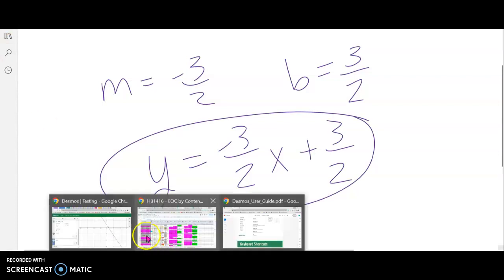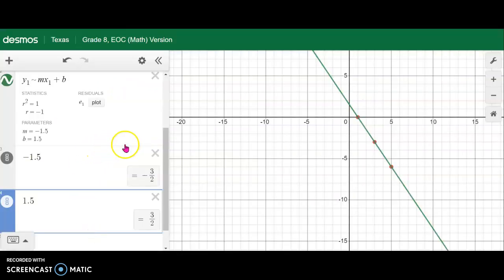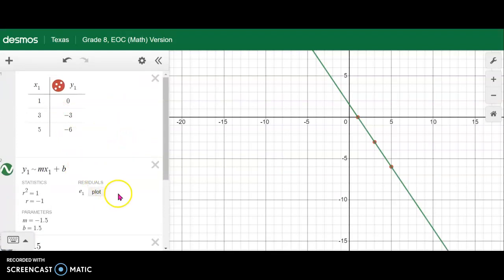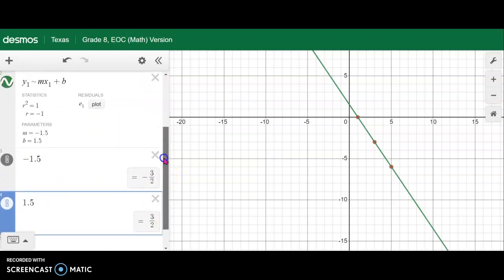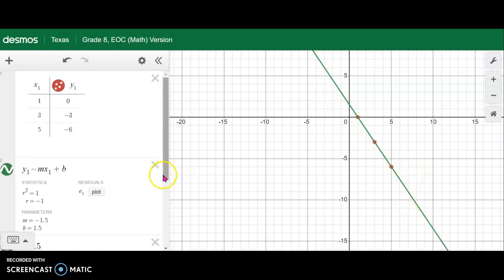All I had to do was use my Desmos graphing calculator and type in a table and find out what the equation is. And you'll know it's correct because you can see it going through the three points that you initially plotted from your table.